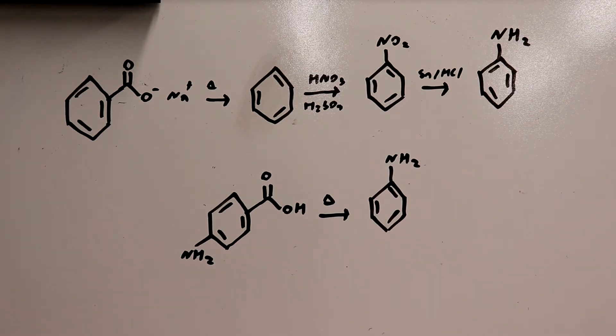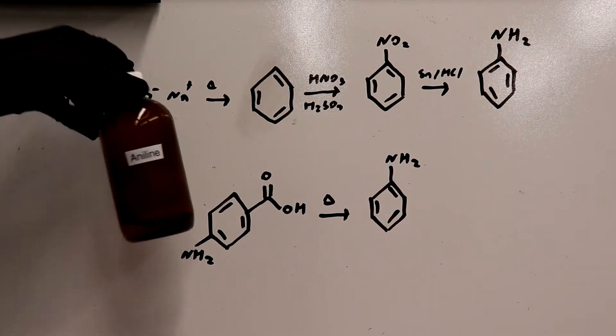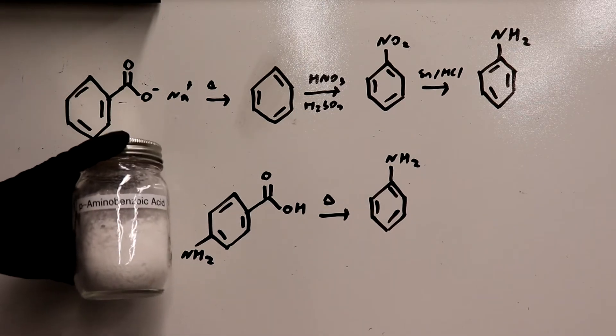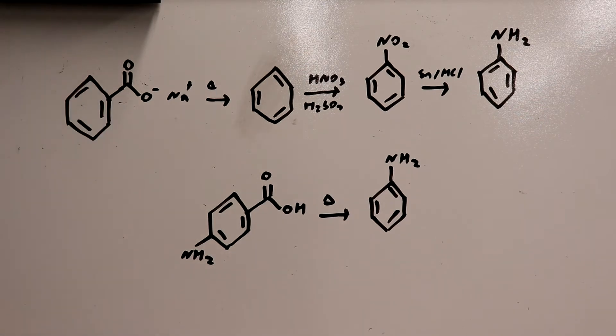Welcome back to the lab. In today's video we're going to be preparing aniline from P-Amino Benzoic Acid, also known as vitamin B10, via thermal decarboxylation.